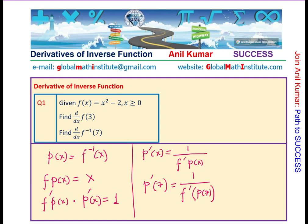Now, what is inverse of 7? Inverse of 7 is 3, right? So, we get this relation as 1 over derivative at 3.